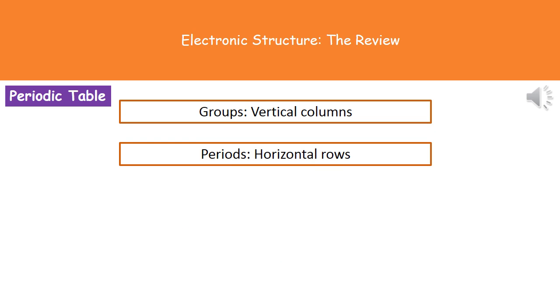When we look at the periodic table, we need to understand that it's arranged in certain ways. There are vertical columns called groups, and on the periodic table you get in your exam paper, they have the numbers at the top. Group one has a number one, group two a number two, and so forth. The other aspect is the horizontal rows, which are referred to as periods, and they just count up in numbers.